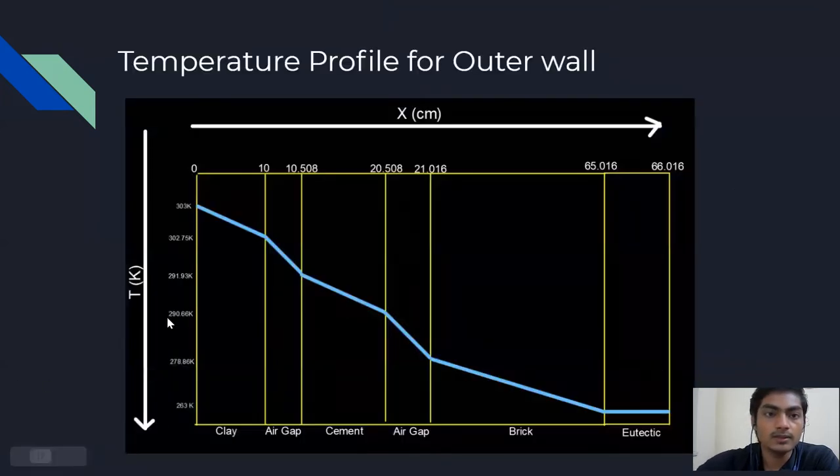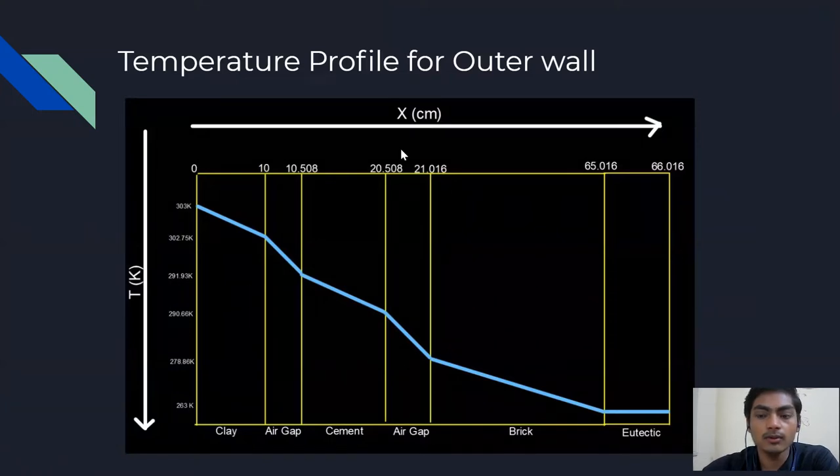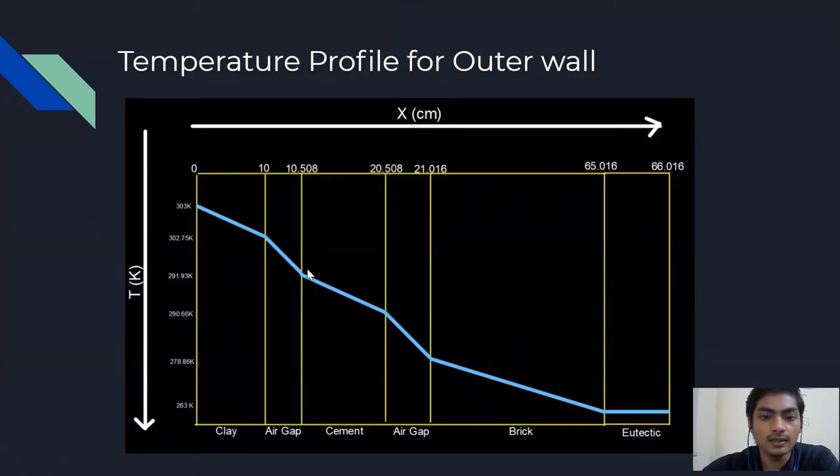Now, we will discuss the temperature profile for the outer wall. As we can see, there is a linear variation in the temperature profile because we use steady state modeling here.